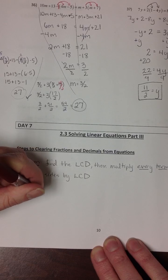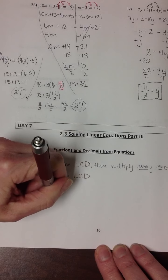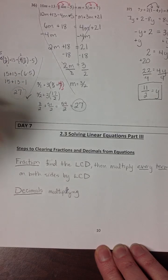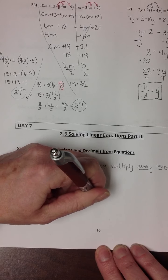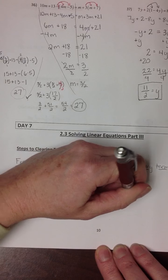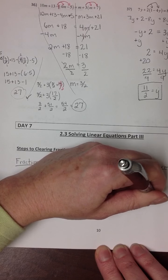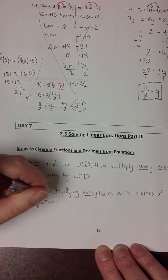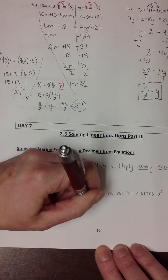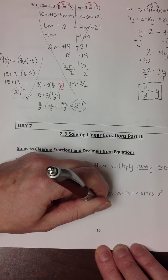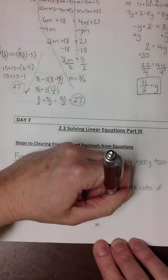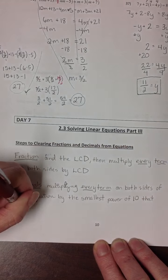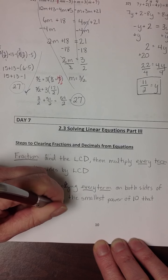we can clear decimals out of an equation by multiplying every term on both sides by the smallest power of 10 that will clear the longest decimal.